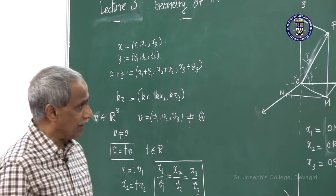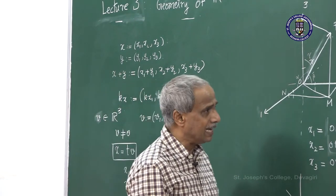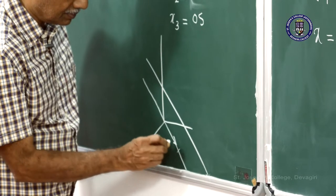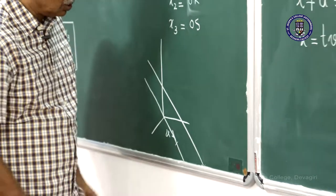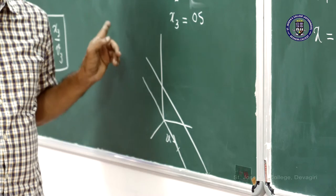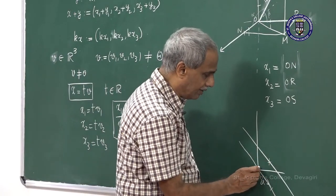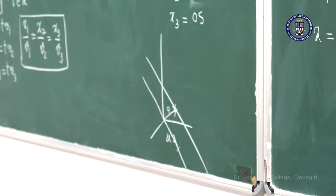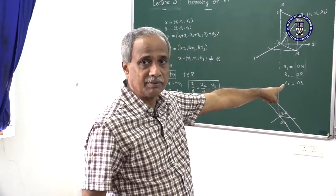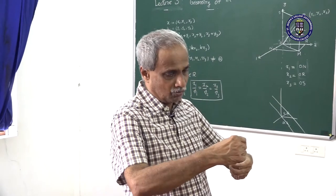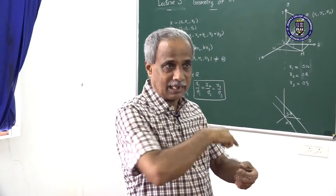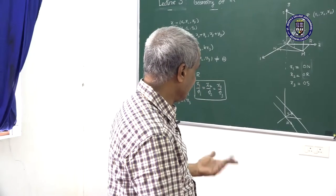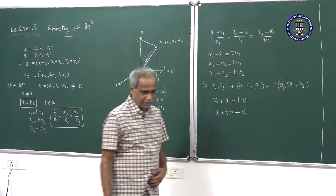If you examine what has happened here: V is some vector along this direction, so x = TV is this line. What you are doing is picking a point A on this and then translating it parallelly. The same process takes place in R3. This can be interpreted as a line passing through the origin that is translated through −A such that the origin is moved parallelly, keeping the line parallel to the point A. That is about lines in R3.